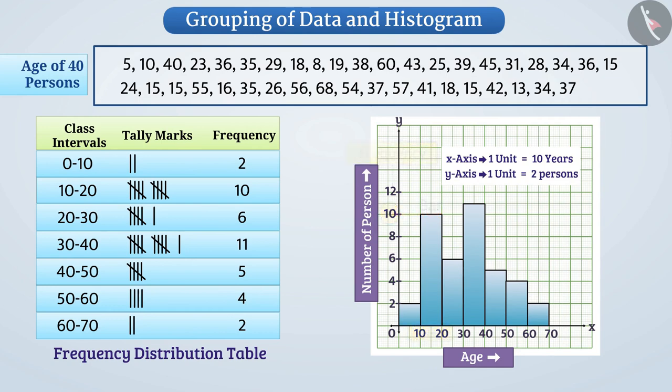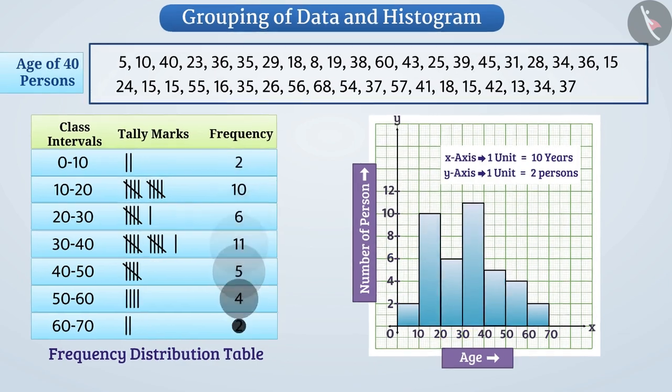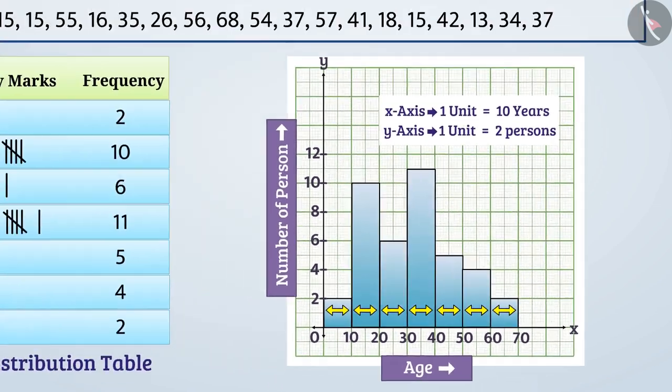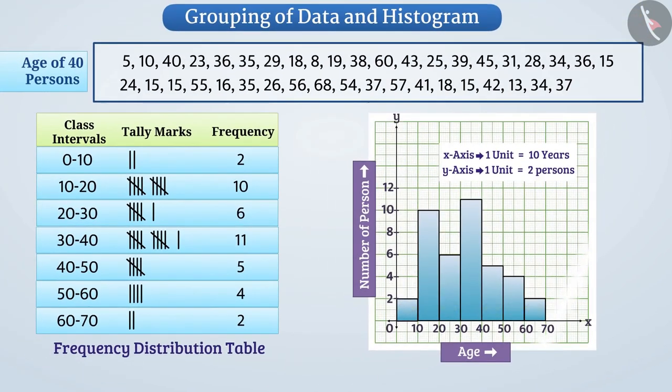For example, the frequency of the class interval 20 to 30 is 6. The bars drawn to show frequency have the same width and the two adjacent bars have no space or distance between them. This type of representation of data is called a histogram.